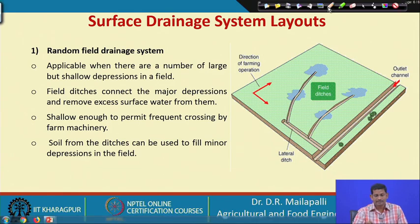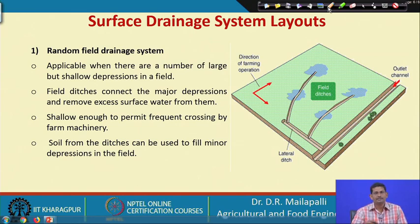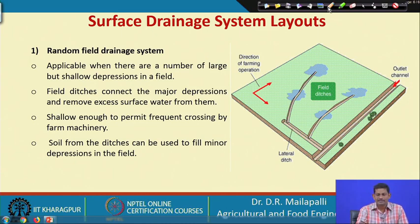That is all for the surface drainage system. Bedding, grading, and planing are required to convey water falling on the surface to the nearest field channels, easing the conveyance. Now, the types of field channel layouts: the first is the random field drainage system.